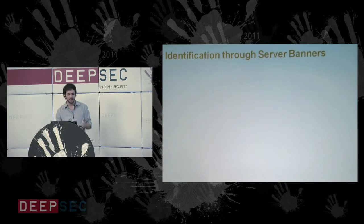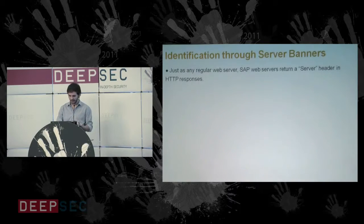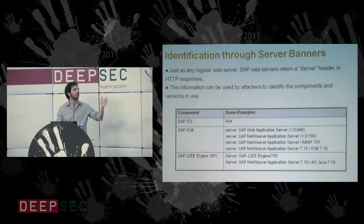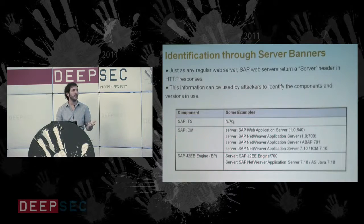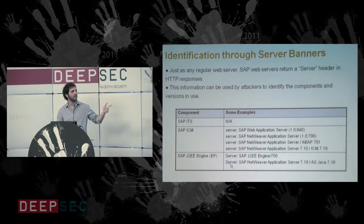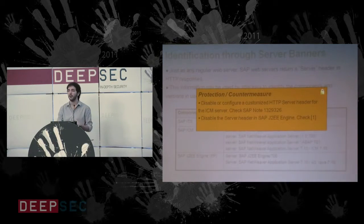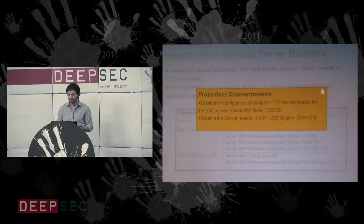The attacks can be divided progressively, starting with identification. Just like any web server, SAP returns a server header in HTTP responses, which an attacker can use to identify which SAP web application is running. For the ITS, since it's a filter, you get the IIS or Apache header. But for the ICM and the Java engine running the Enterprise Portal, you get quite descriptive header messages that let you fingerprint the background application.